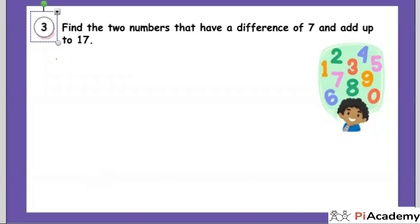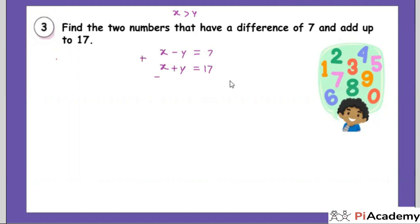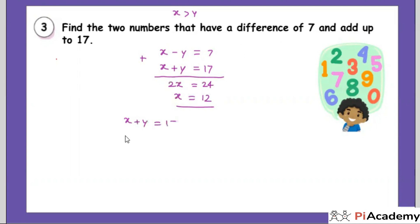I'm solving this. Let x be the greater number and y the smaller. x minus y equals 7, and x plus y equals 17. Adding the equations: 2x equals 24, so x equals 12. Substituting into x plus y equals 17: 12 plus y equals 17, so y equals 5. The two numbers are 12 and 5.